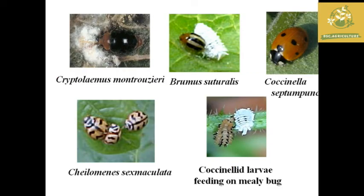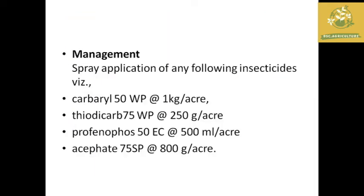Additional management practices for mealy bug include destruction of infested plant material, uprooting and burning affected plants, and applying plant oil treatments. Neem-based extracts are also recommended.